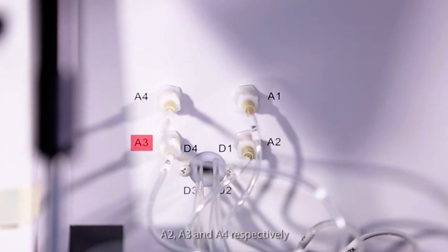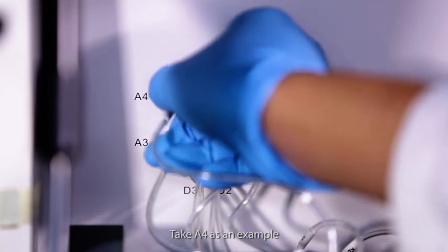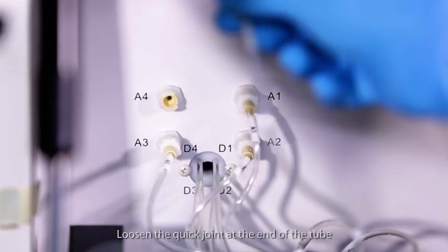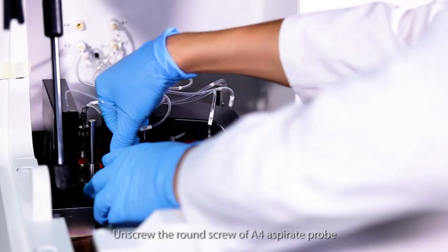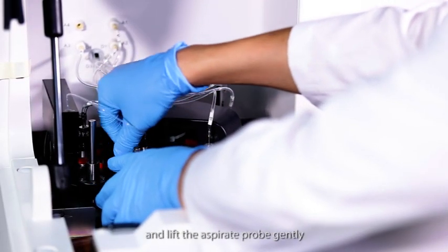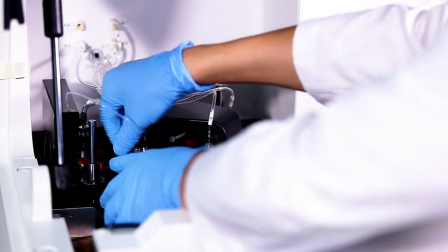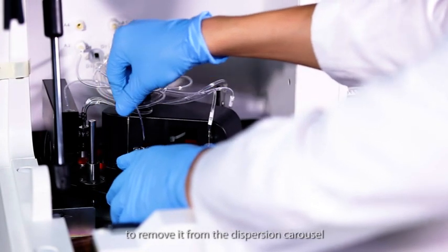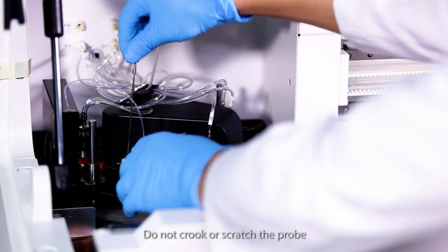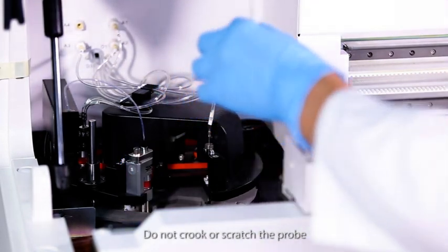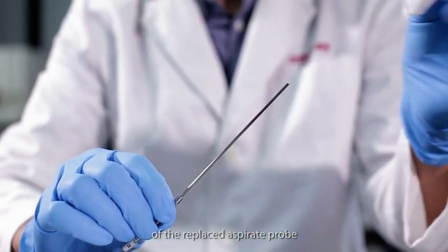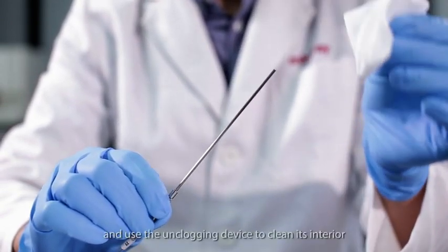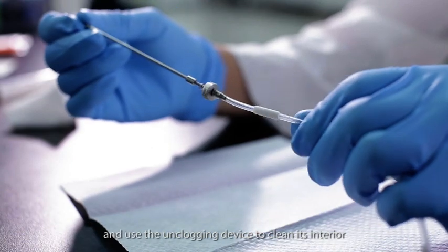The four dispersion aspirate probes are marked A1, A2, A3 and A4 respectively. Take A4 as an example. Loosen the quick joint at the end of the tube. Unscrew the round screw of A4 aspirate probe and lift the aspirate probe gently to remove it from the dispersion carousel. Do not crook or scratch the probe. Use alcohol swab to clean the exterior of the replaced aspirate probe and use the unclogging device to clean its interior.